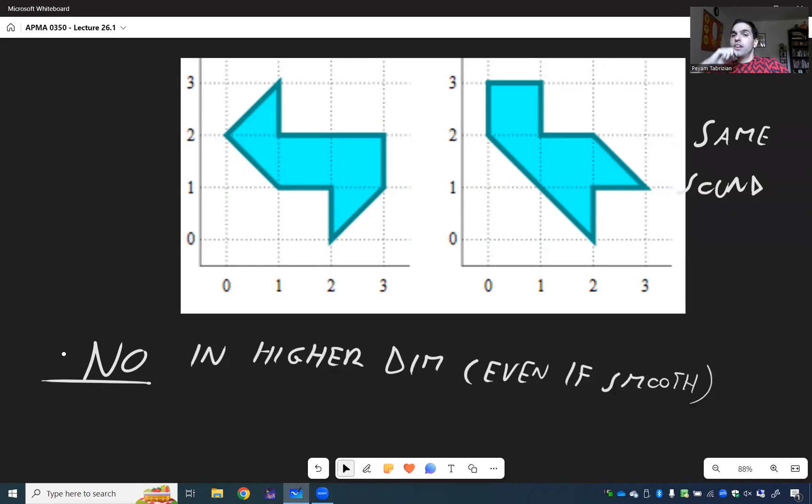And believe it or not, there is a 16 dimensional counterexample. In other words, it turns out there are two different 16 dimensional donuts that have the same sound. Who would have thought? But to be honest, I think it's kind of cool to listen to a 16 dimensional instrument. Kind of freaky.